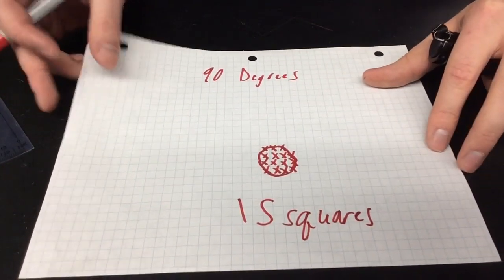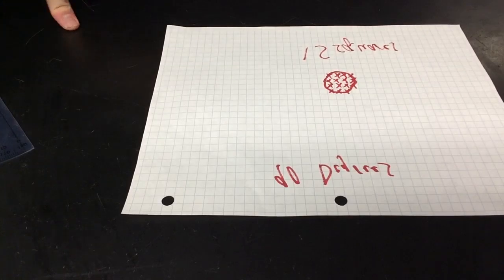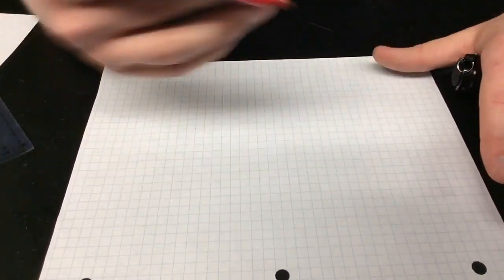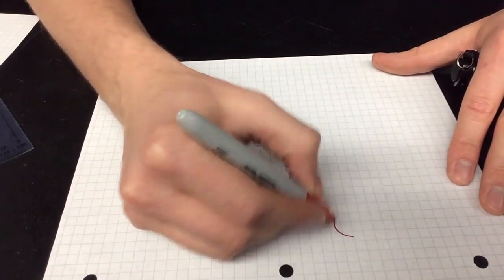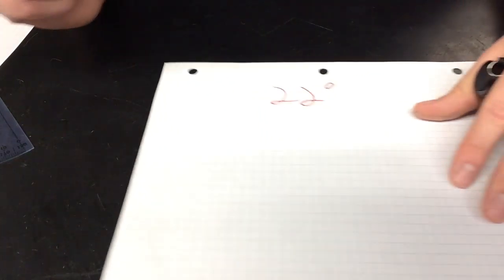There we go. So we have 15 squares. Now I'm going to flip it to the other side. Let me get a new piece here. Okay. So for the second piece. Again, your graph paper is going to look a little bit different than this. We're going to do 22 degrees. Those are 22 degrees.